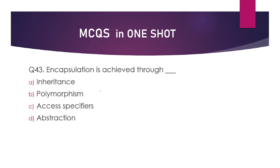Encapsulation is achieved through inheritance, polymorphism, access specifier, or abstraction? The answer will be option number C — that is access specifier.